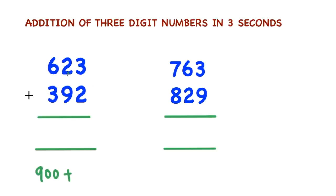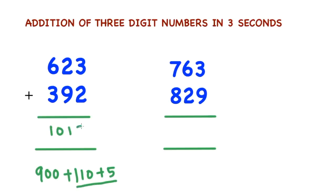Now in the tens place, 2 is there — you consider 20. In the tens place, 9 is there — you consider 90. 90 plus 20 is 110. Now in the units place, 3 plus 2 is 5. Now you add these numbers: 110 plus 5 is 115. 900 plus 115 is 1015.